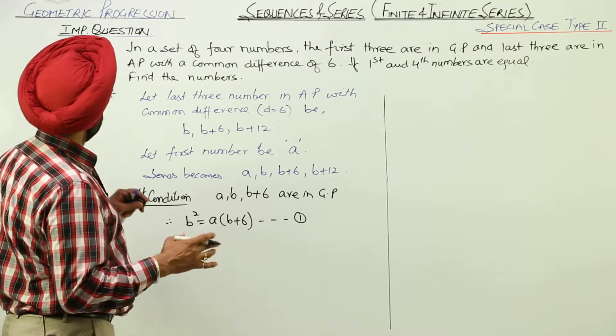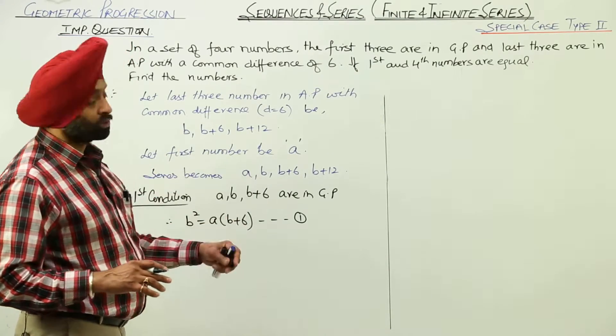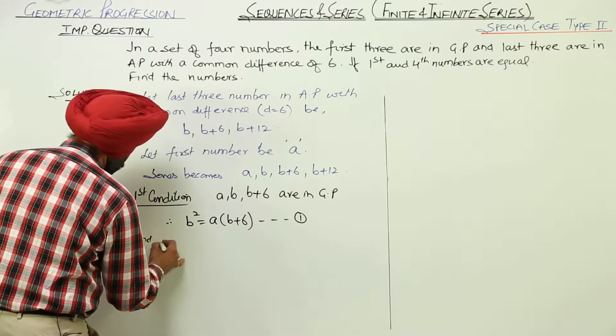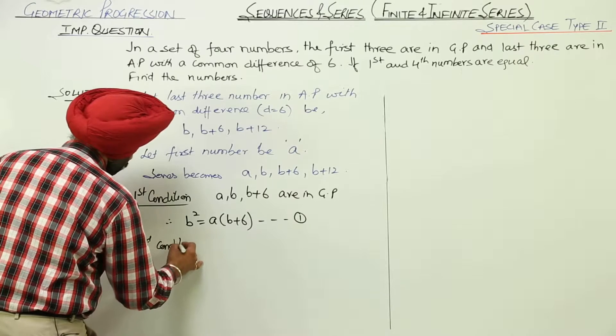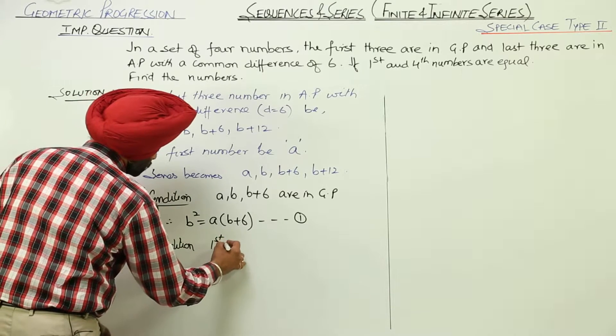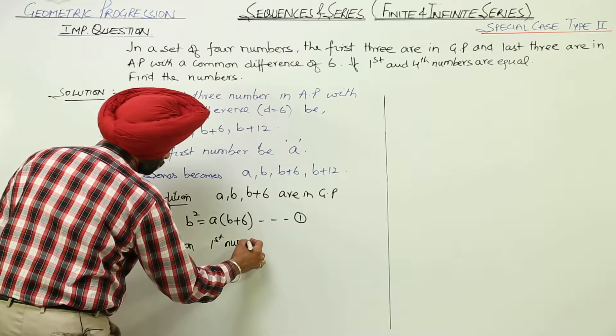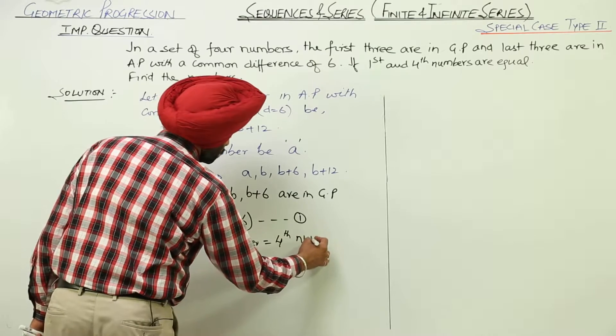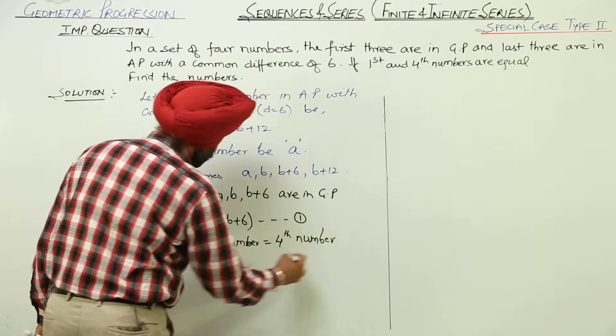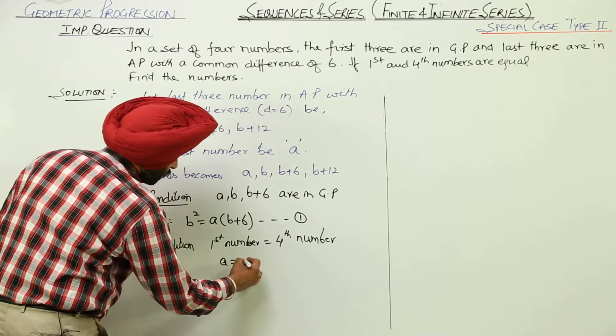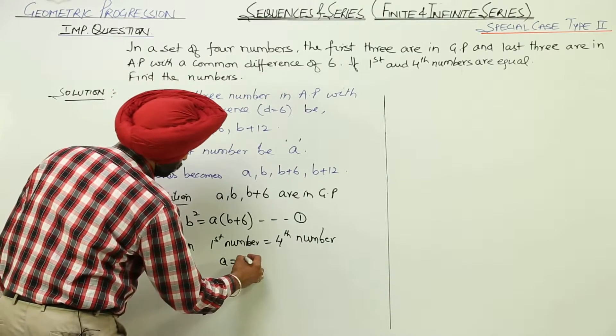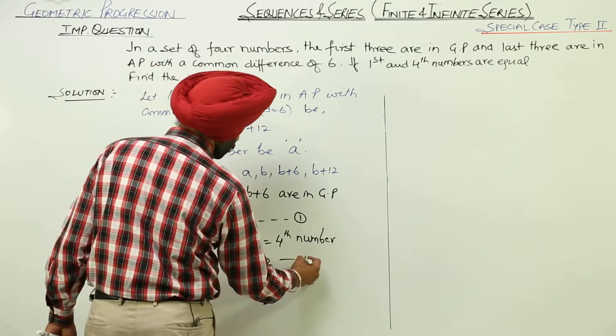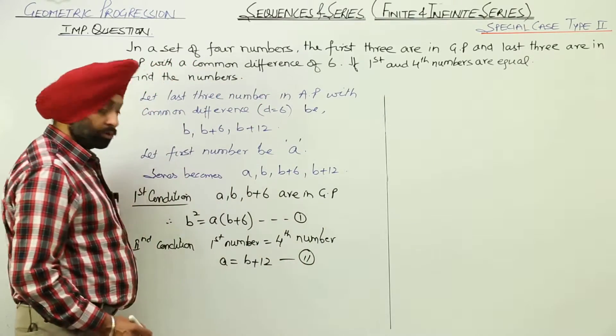Then, last 3 are already in AP and also first and fourth numbers are equal. Second condition, first number is equal to fourth number. This is the second condition. So, first number we are having A and last number is B plus 12 and let this be 2.